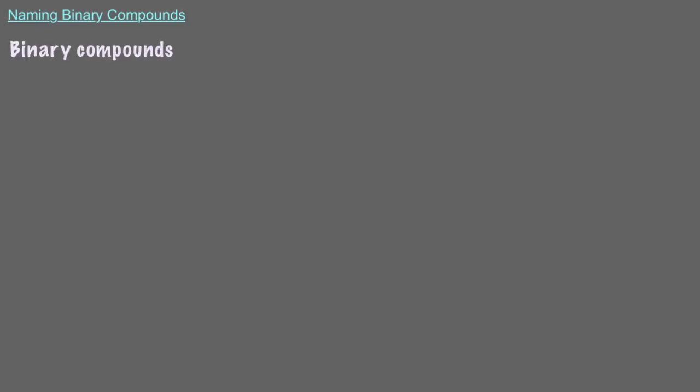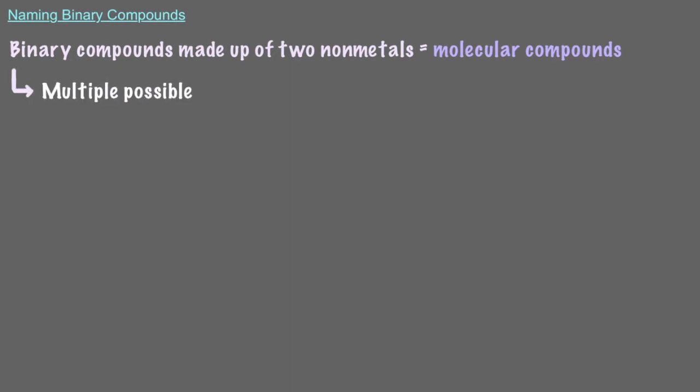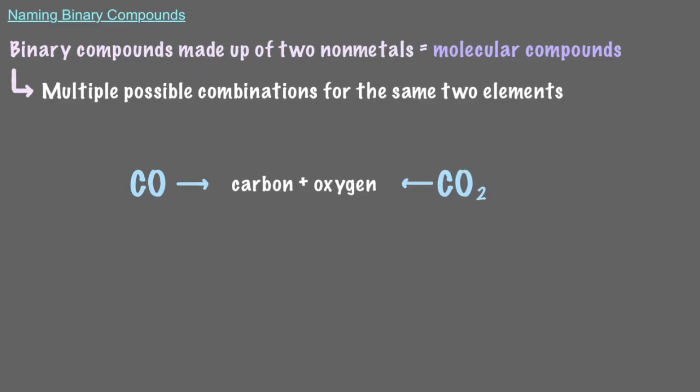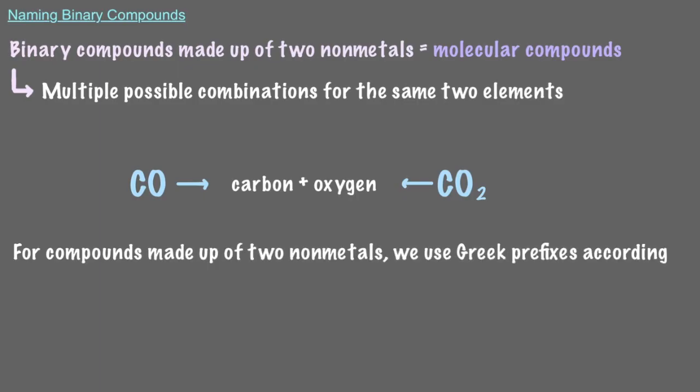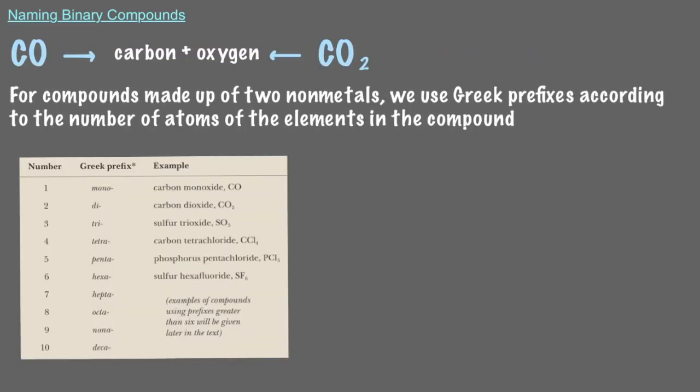Let's start with binary compounds made up of two nonmetals, also called molecular compounds. When you have two nonmetals forming a binary compound, we have multiple possible combinations for the same two elements. For example, these two compounds are both made up of carbon and oxygen. So how do we distinguish the two? Well, for compounds made up of two nonmetals, we use Greek prefixes according to the number of atoms of the elements in the compound. Here's a table with all the Greek prefixes we will need. On top of that, we change the end of the name of the second element to IDE.